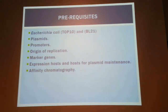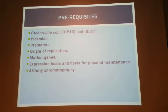Top10 E. coli is used for the cloning of vectors containing gene inserts and construction of libraries. For protein expression we use other hosts such as BL21 and DH5 alpha. Before you begin expression or design your experiment, you must ensure that your vector and host are compatible — which brings us to plasmids and the promoter.